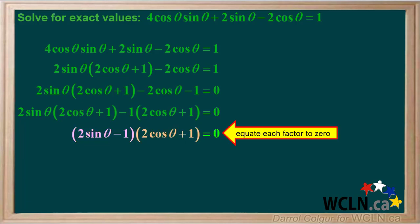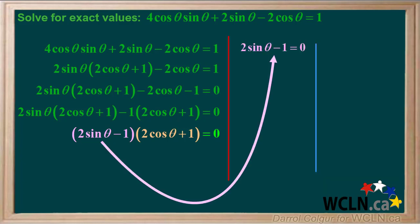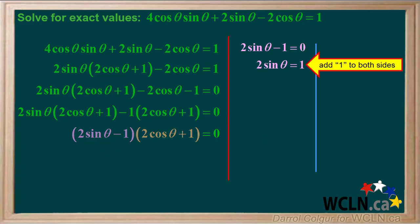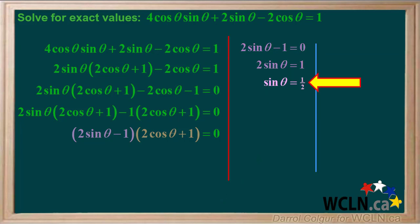We can now solve this equation by equating each factor to zero and simplifying. We'll start with the factor on the left: 2 sine theta minus 1 equals zero. Adding 1 to both sides gives us 2 sine theta equals 1, so sine theta equals positive 1 half.